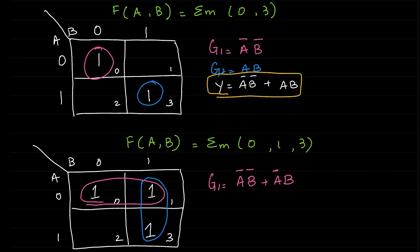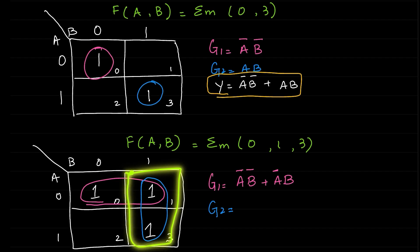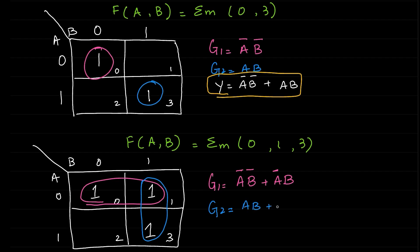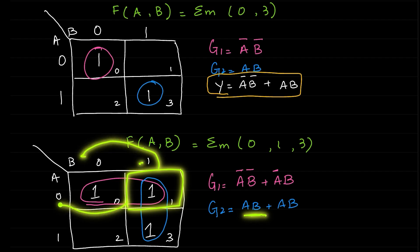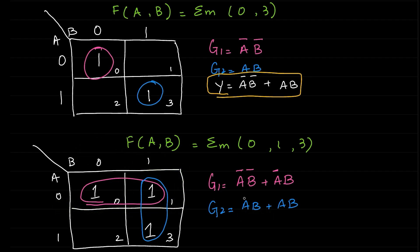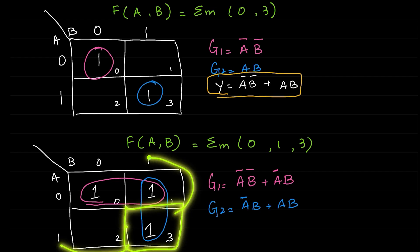Now the second group, group 2. Again two cells means AB + AB, there will be two AB's. Now what we need to find out is first AB. B is 1, A is 0, so we will call it A̅B. And in the second cell, A is 1, B is also 1, so AB.